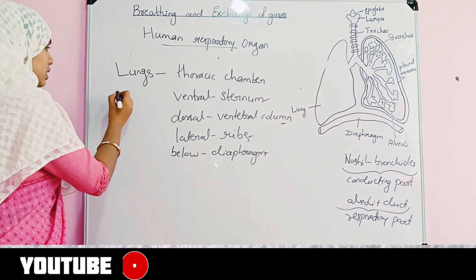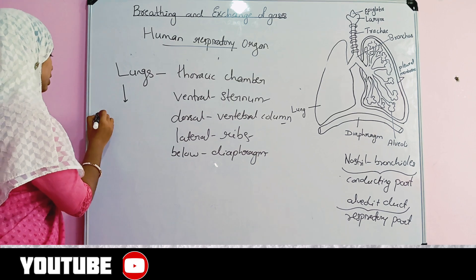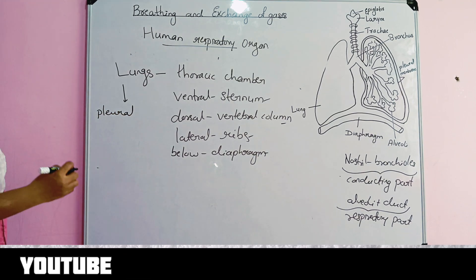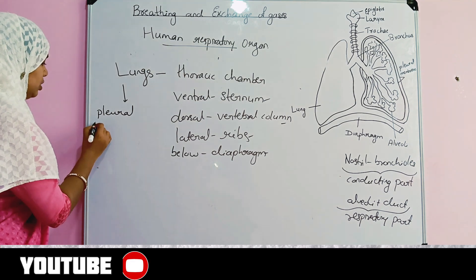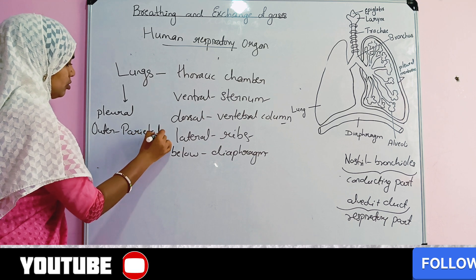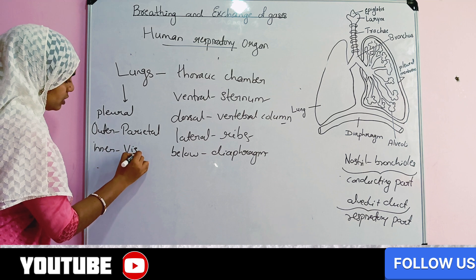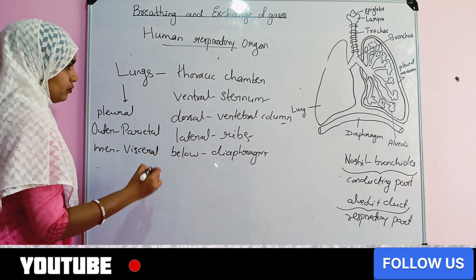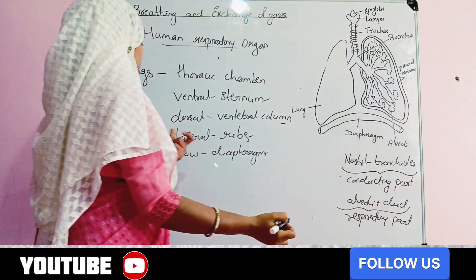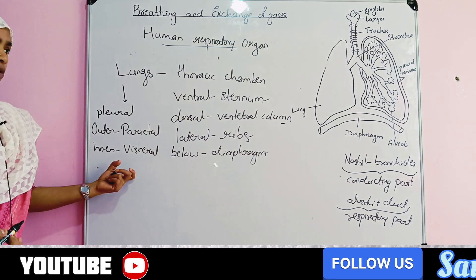The lungs are covered by two layers called the pleural layer. The outer pleural layer is called the parietal pleura, and the inner layer is called the visceral pleura. You can see in the diagram the outer one is the parietal pleura and the inner one is the visceral pleura.